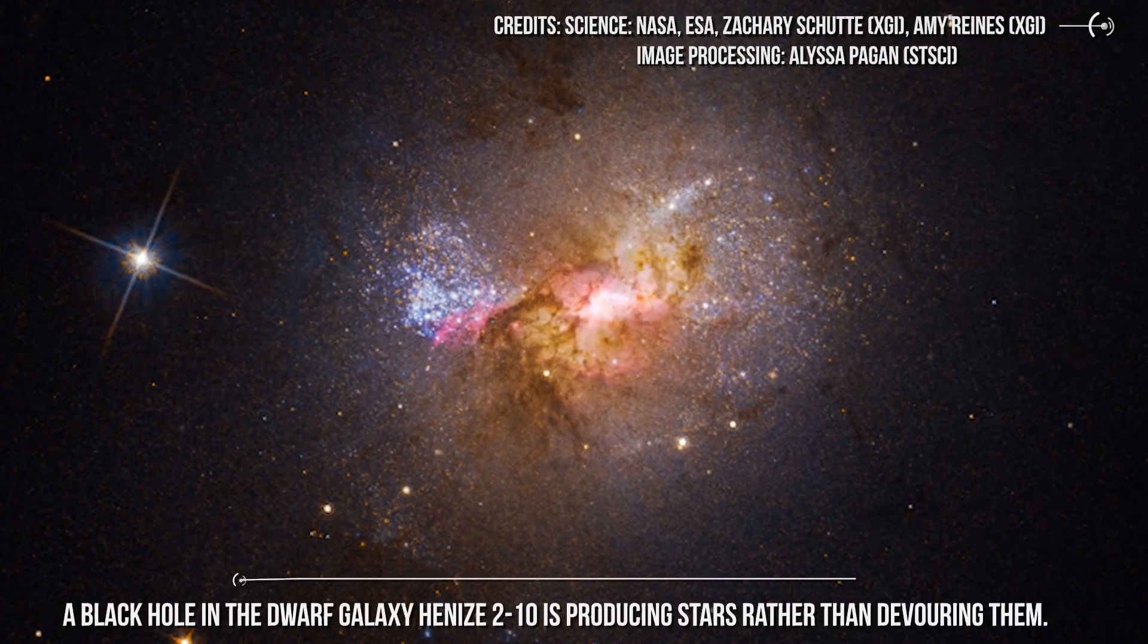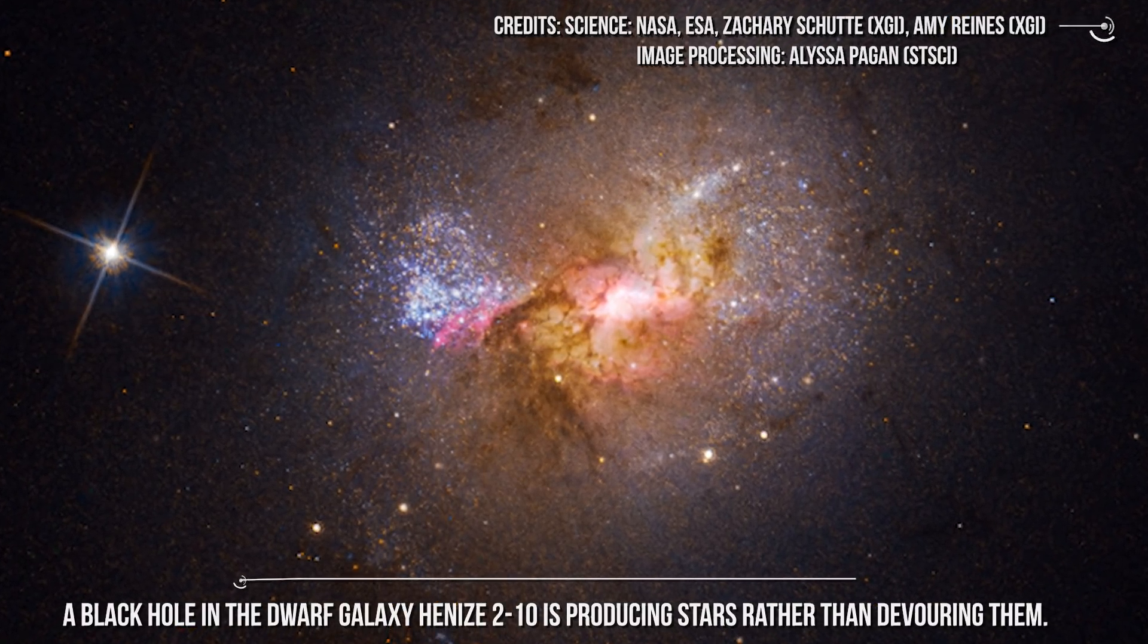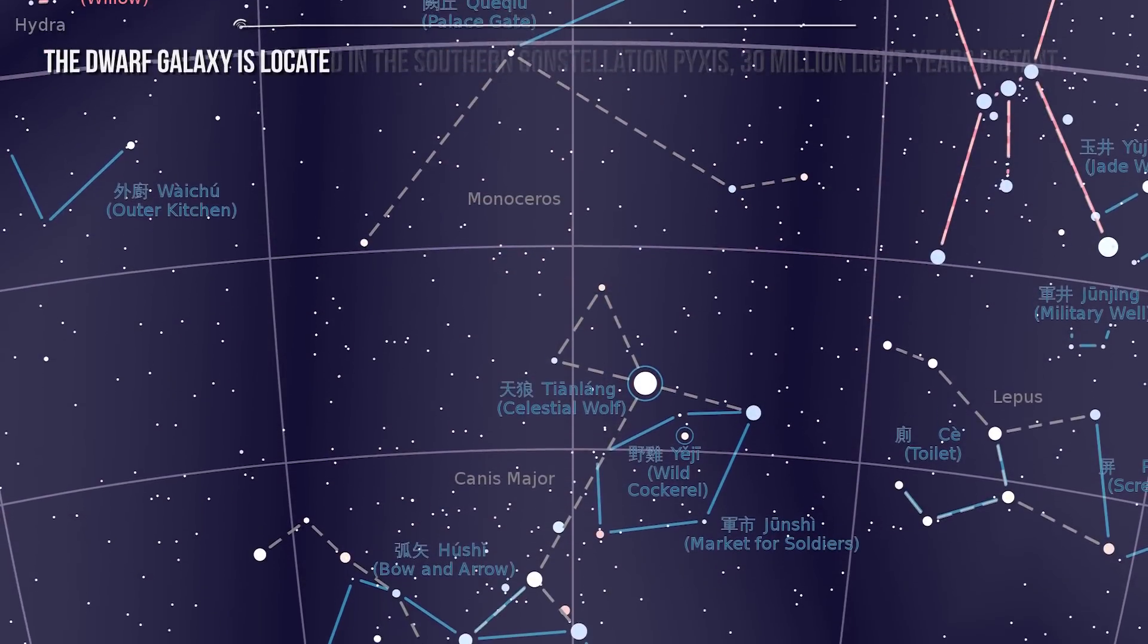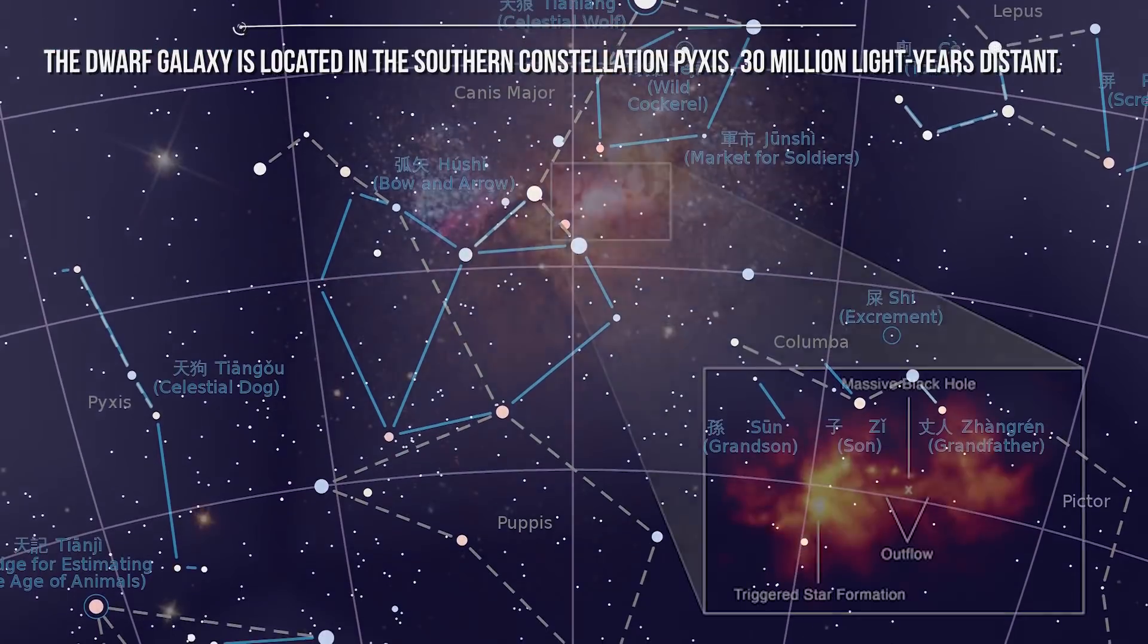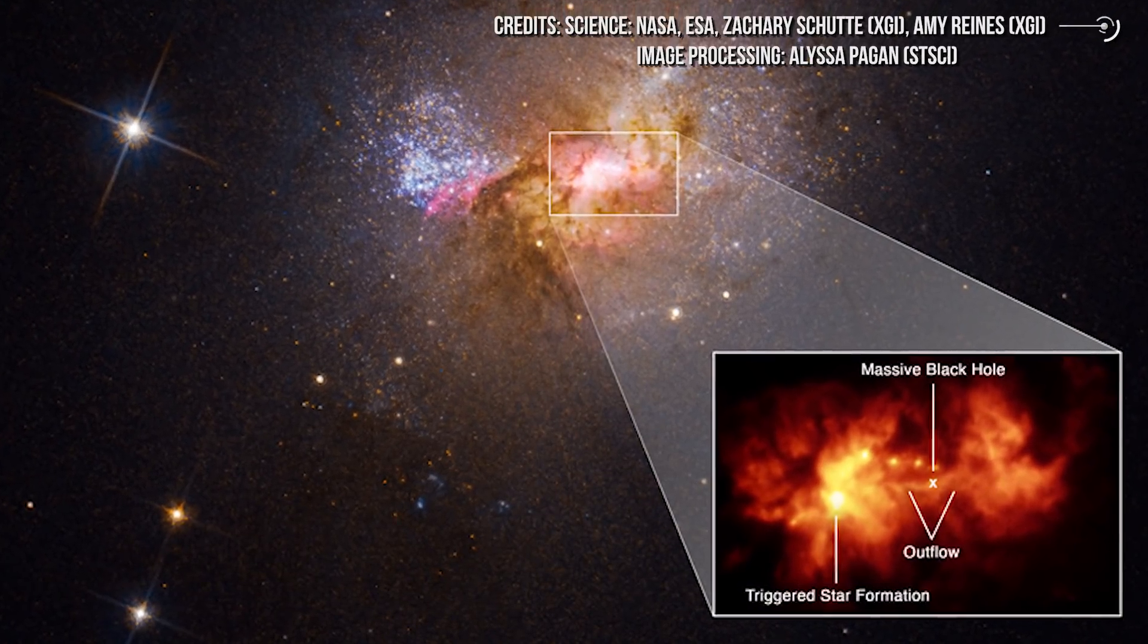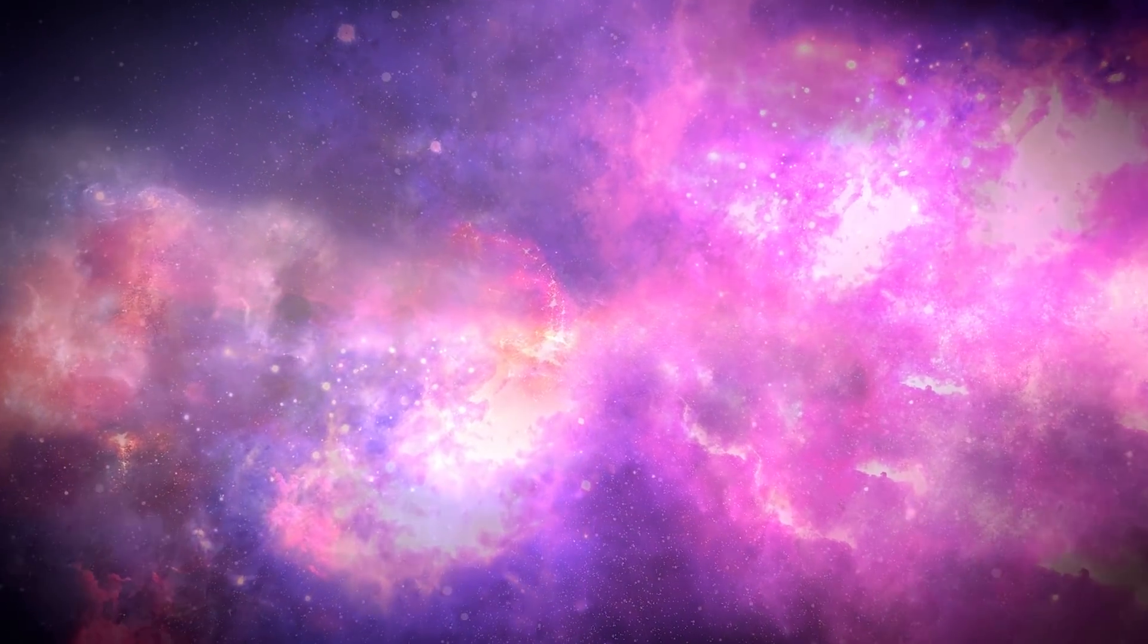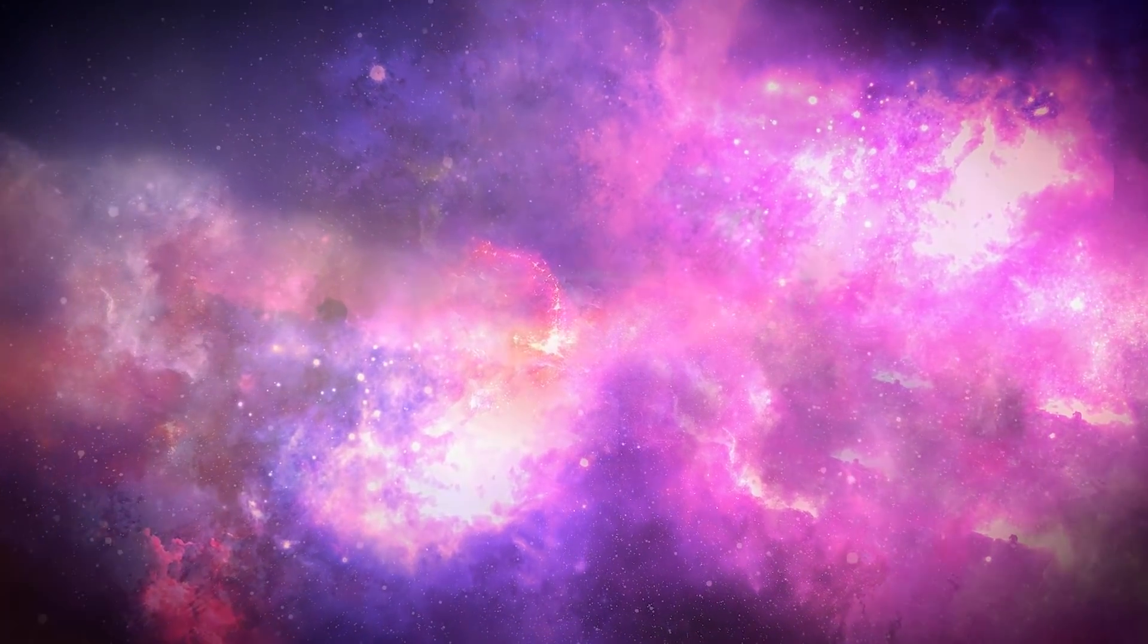A black hole in the dwarf galaxy Henize 210 is producing stars rather than devouring them. The black hole appears to be contributing to the galaxy's inferno of new star creation. The dwarf galaxy is located in the southern constellation Pyxis, 30 million light years distant. By carefully looking at the image we can see some extremely bright features here and there. This is due to the fact that we are looking at a starburst galaxy. A galaxy recognized for having a large number of diverse star-forming areas and for having some really gorgeous characteristics all around the galaxy.